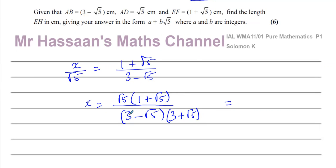When you multiply the bracket out you get the first term squared minus the second term squared: 3 squared is 9, and root 5 squared is 5, so you get 9 minus 5 which equals 4. The middle terms, 3√5 and −3√5, cancel to zero. And if you multiply the denominator by (3 + √5), you must multiply the numerator by the same thing to keep it as an equivalent fraction.